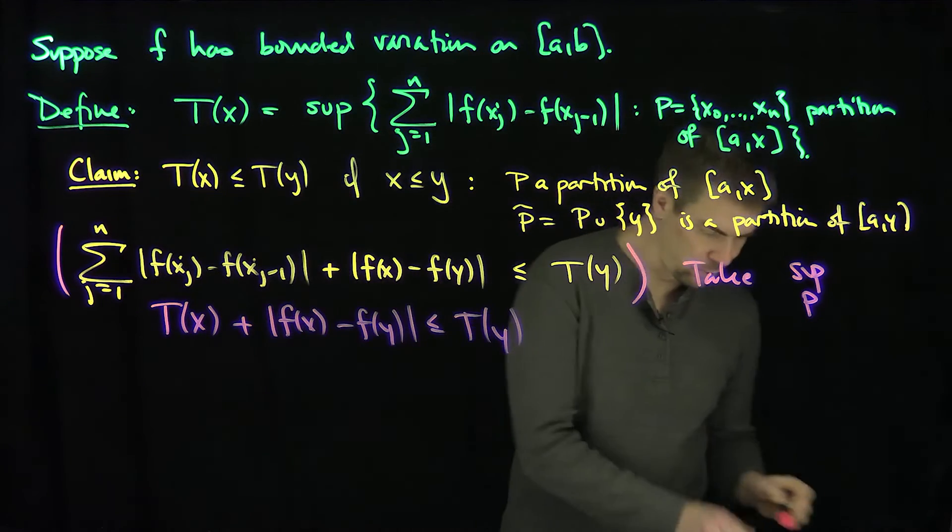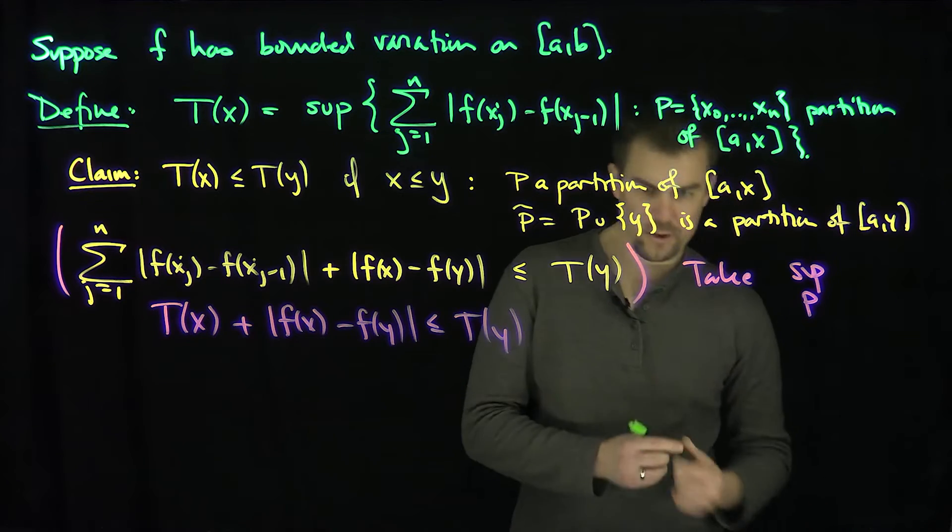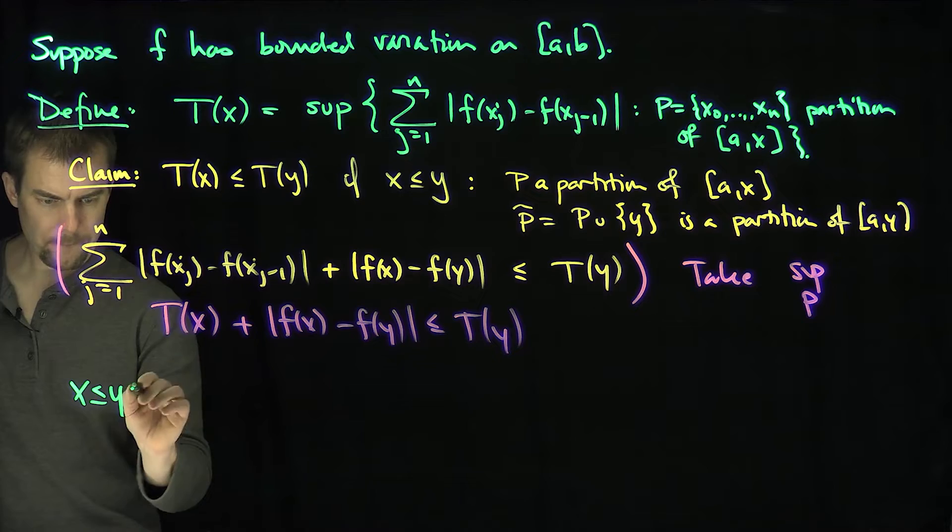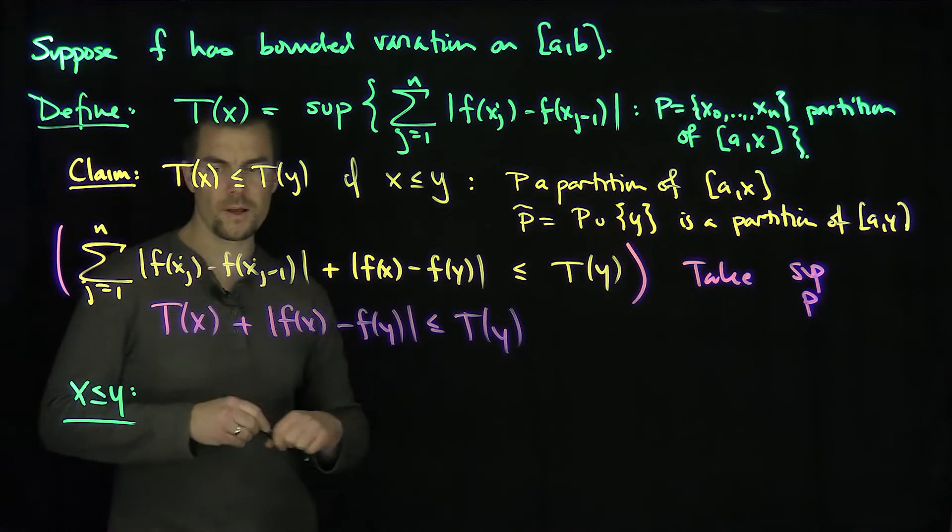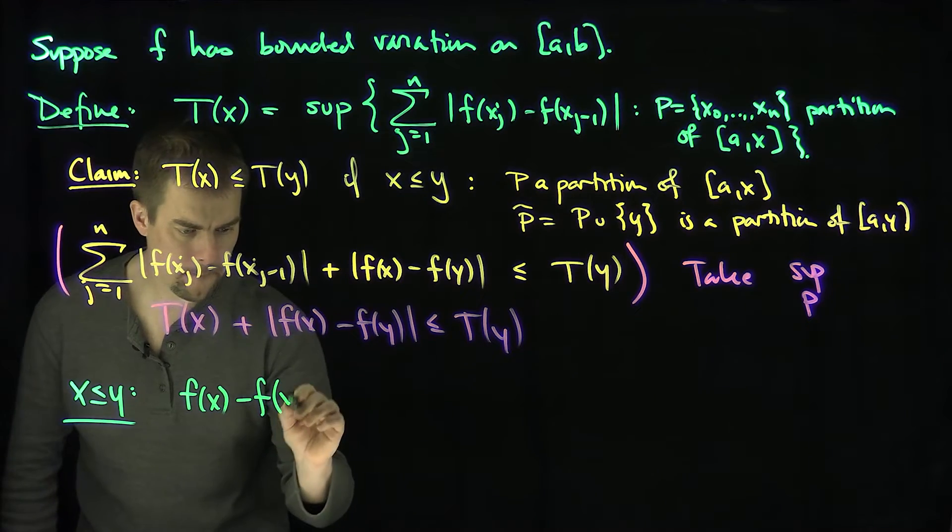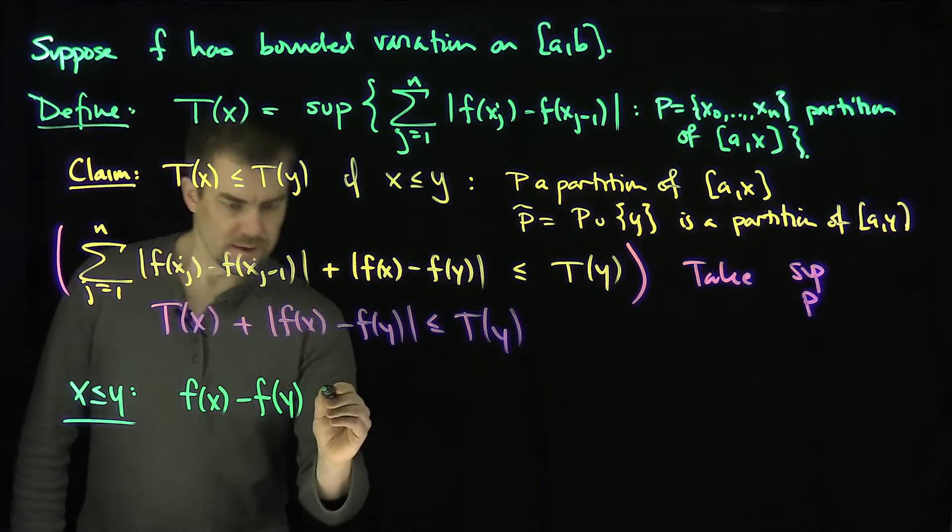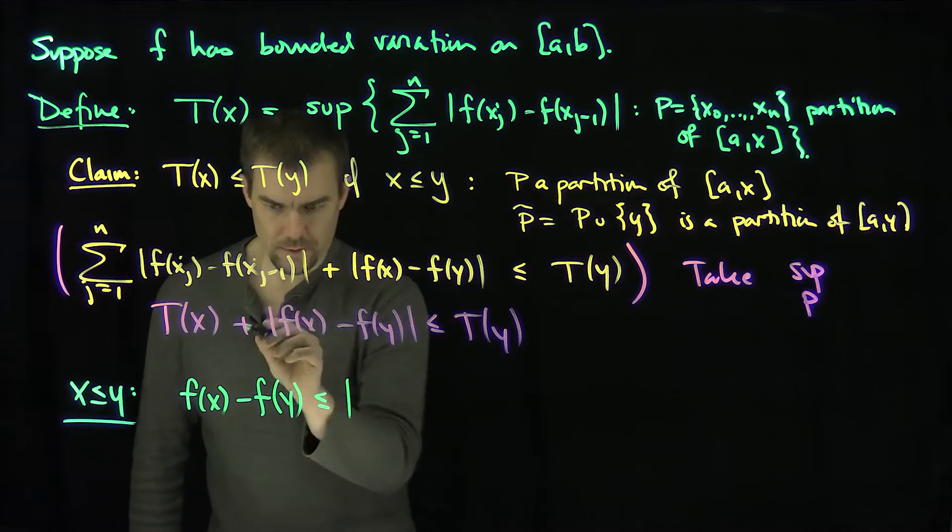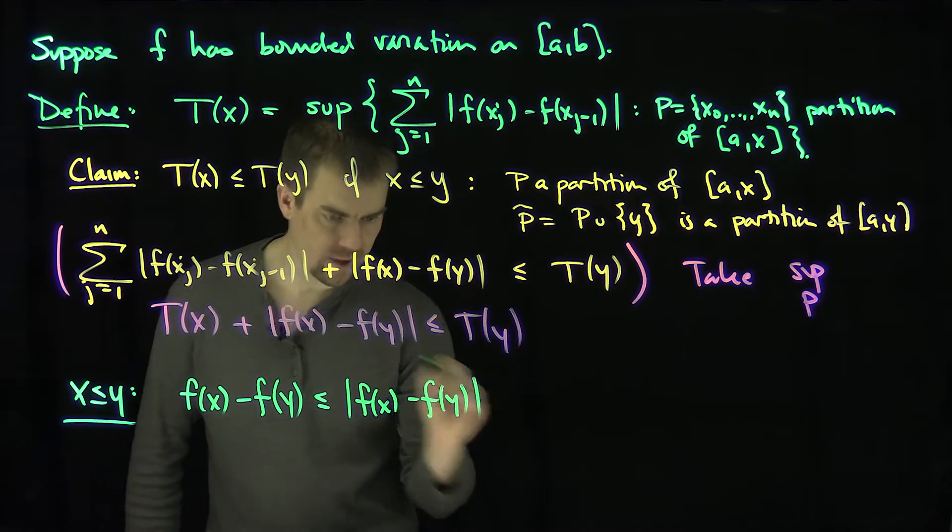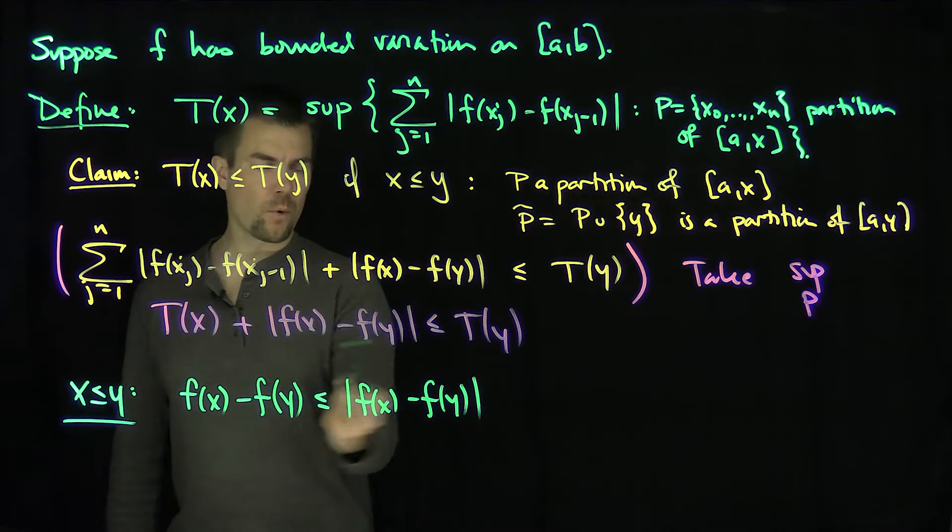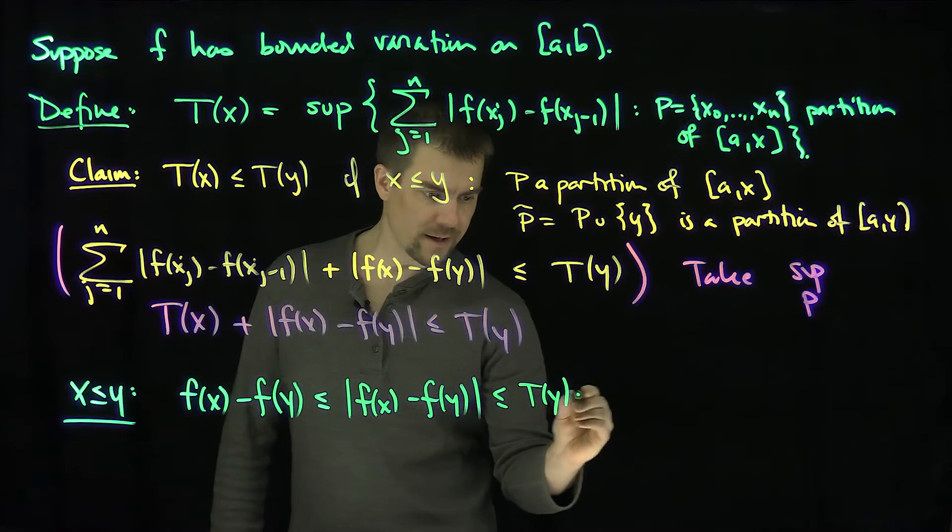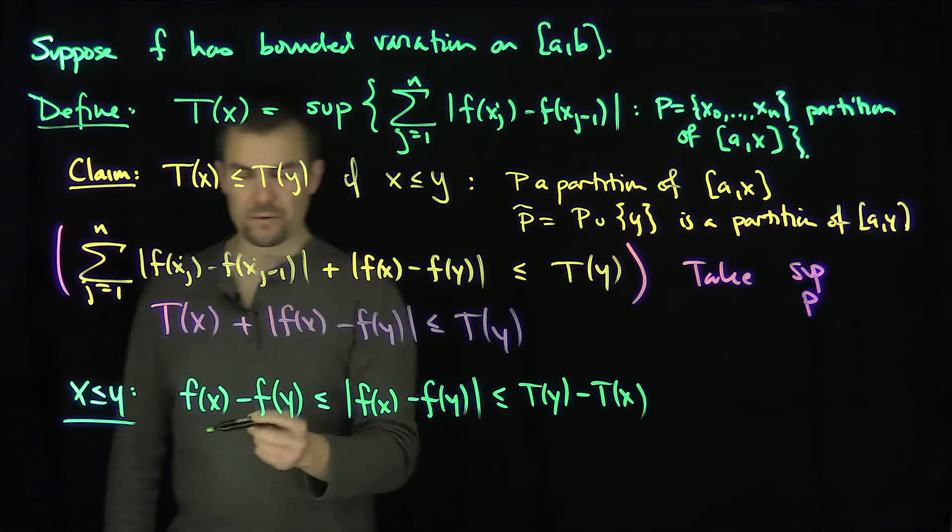So if x is less than y, then F of x minus F of y is less than or equal to the absolute value F of x minus F of y, which is less than or equal to T of y minus T of x by our claim.